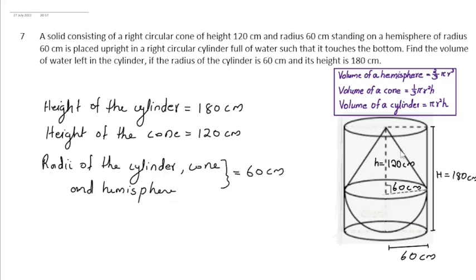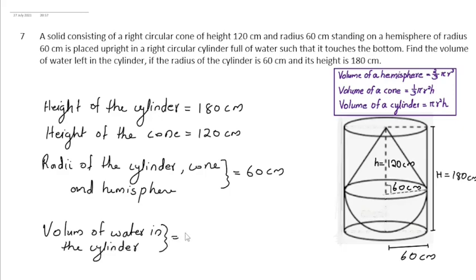The cylinder is full of water, so the volume of water in the cylinder is equal to the volume of the cylinder. Volume of the cylinder is pi r squared H, where capital H is the height of the cylinder.